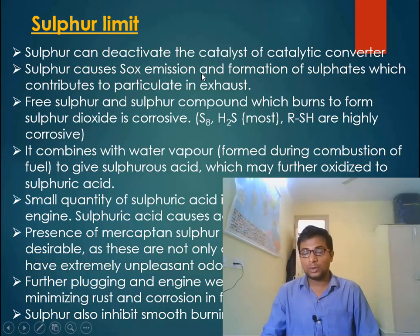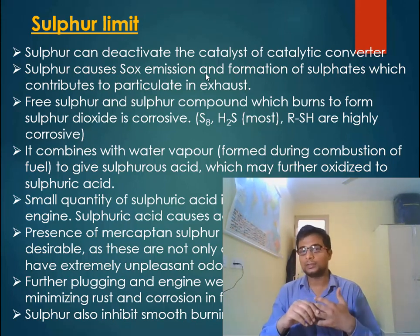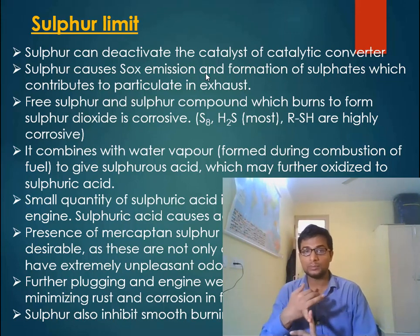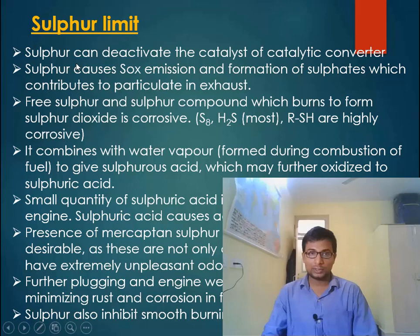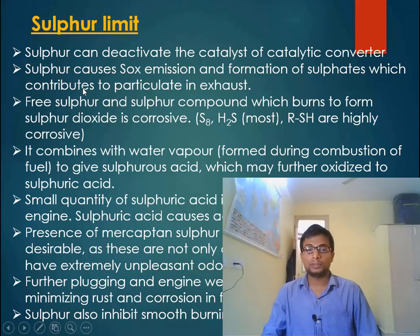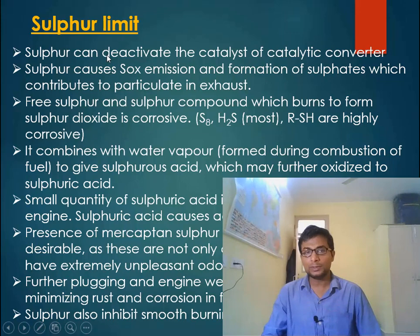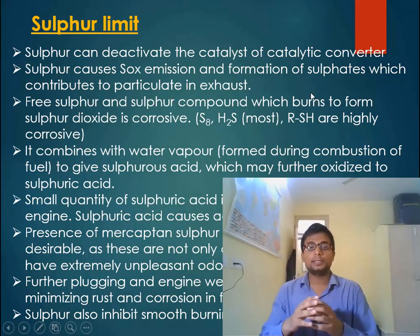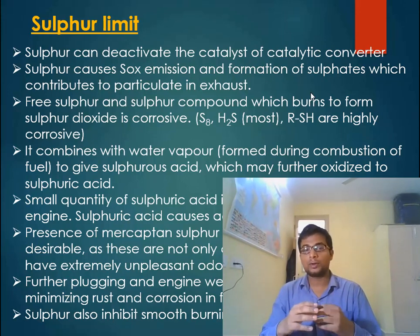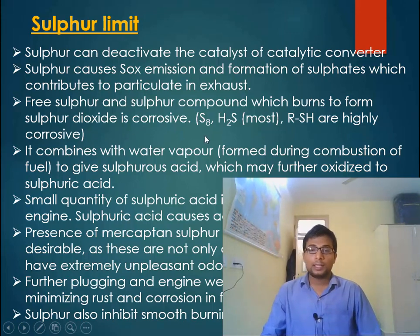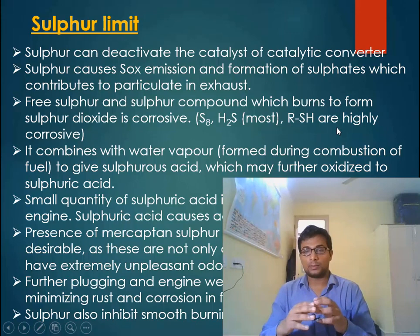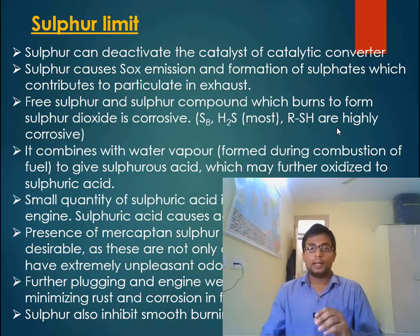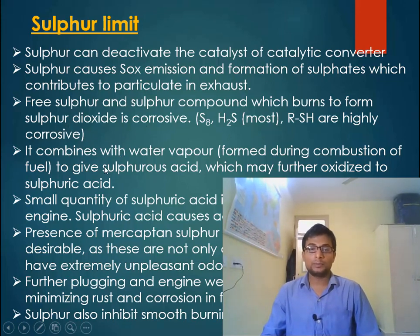One problem with sulfur is it may deactivate the catalysts of the catalytic converter. Sulfur also forms SOx, and even with the use of a catalytic converter, we cannot reduce SOx emission — the catalytic converter only reduces NOx, carbon monoxide, and unburnt hydrocarbons. Additionally, sulfur may turn into sulfate during combustion, and sulfate is one of the components of particulate matter in exhaust. Furthermore, sulfur reacts with oxygen to form sulfur oxides, which are corrosive — and even elemental sulfur, H2S, and mercaptans (RSH) are corrosive. Sulfur oxides react with water vapor to form sulfurous acid, which ultimately oxidizes to form sulfuric acid, a very strong acid that may corrode car engines.